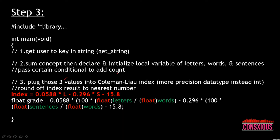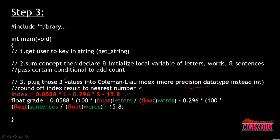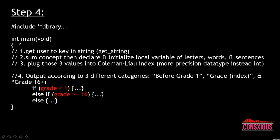For step three, once we get the three values we plug them into the index formula. We use a more precise data type — float. In the formula, L means letters divided by words, and S means sentences divided by words. To get a precision data type, we add a float cast with brackets. The variable also needs to be declared as float. This is how we get a more detailed precision result. After that, we also need to round to the nearest number.